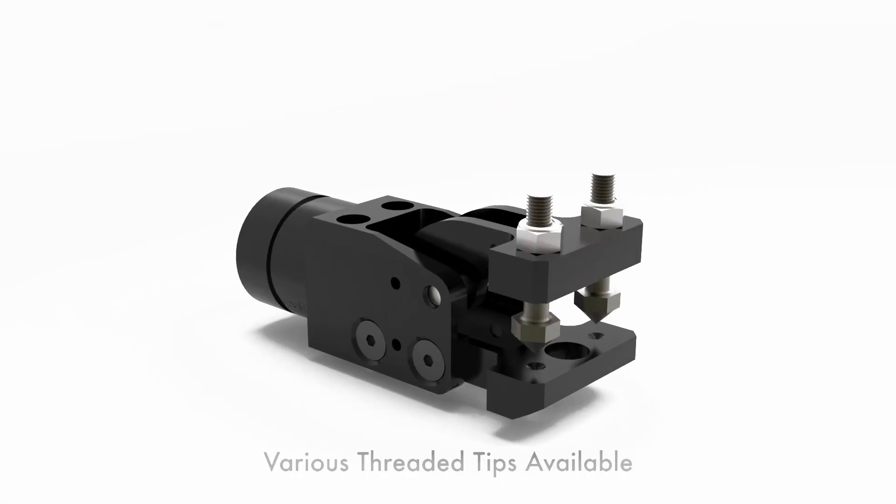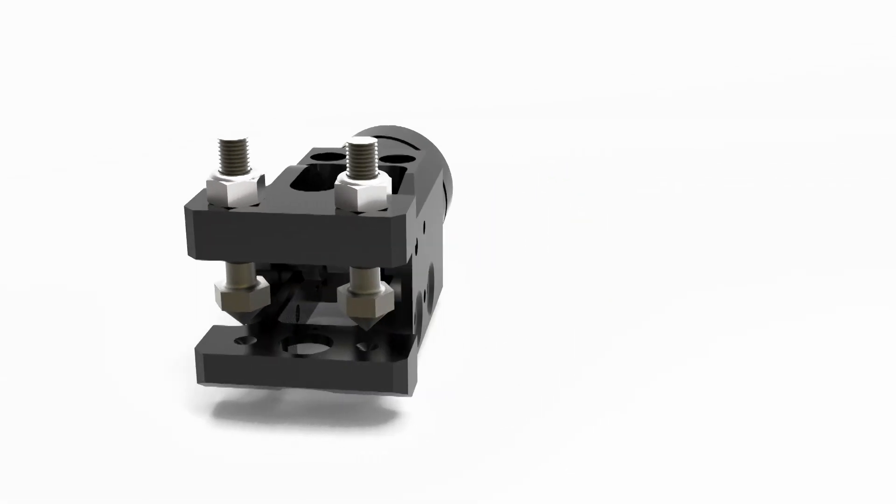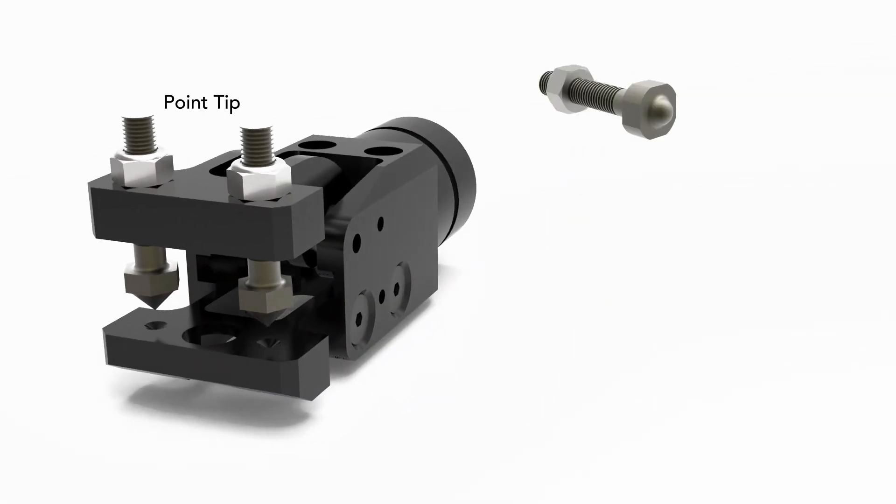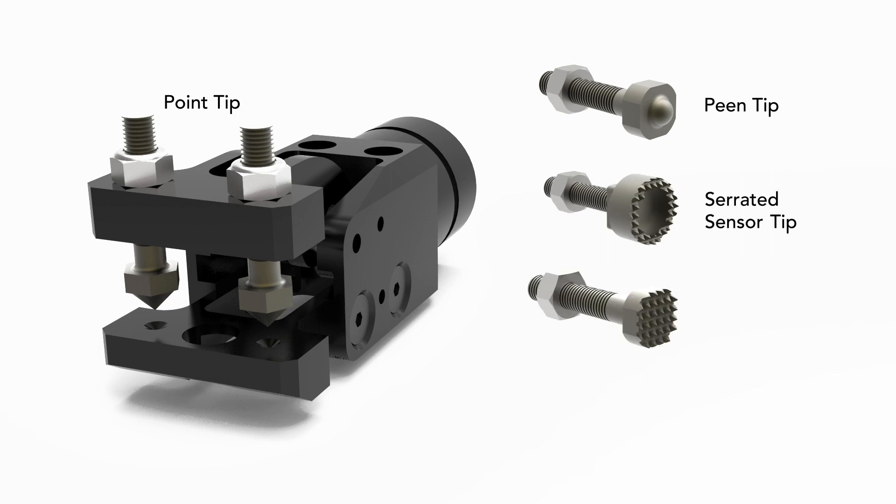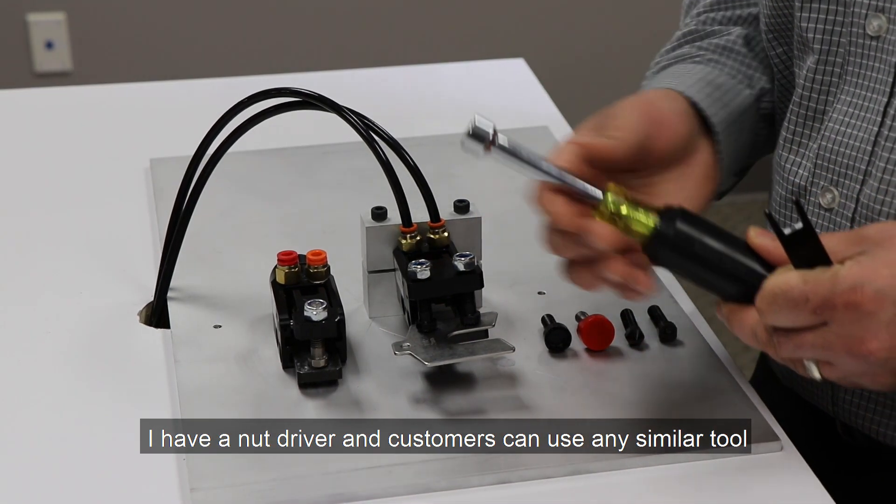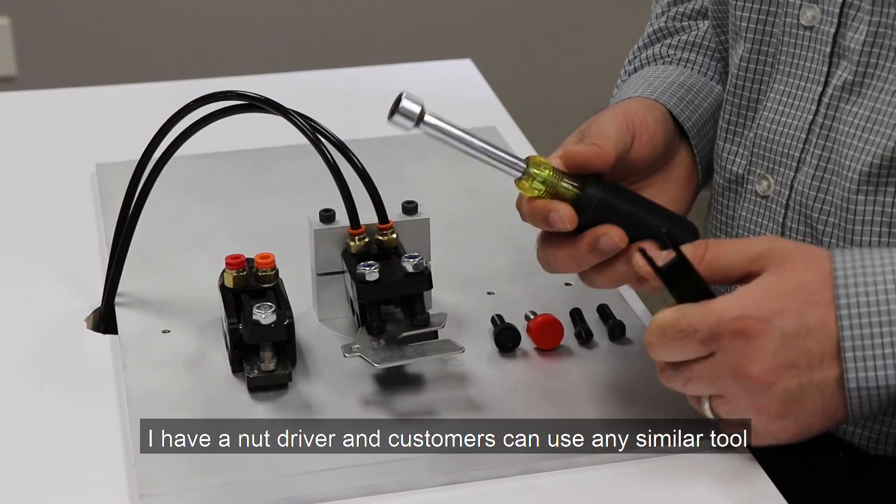Tip options available for the 84N1 include the point tip with a point contact, peen tip with a spherical contact, serrated tip with a sensor option, another serrated tip with multiple contacts, and a flat polyurethane tip. I have a nut driver and customers can use any similar tool.